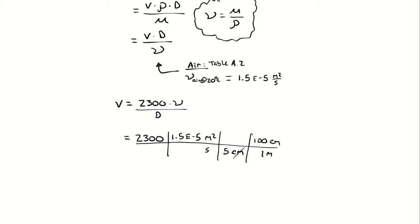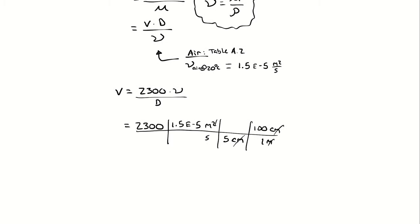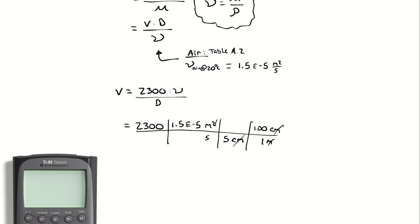Then centimeters cancels centimeters. The meters cancel one of the meters in the square, leaving us with meters per second. If I pop up my calculator, I can take 2,300 multiplied by 1.5 times 10 to the negative 5th. And I get a velocity of 0.69 meters per second.